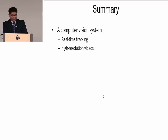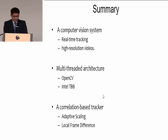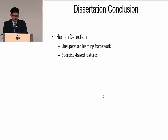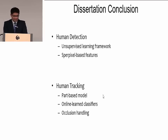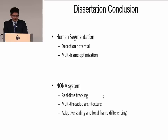To summarize this chapter: we developed a computer vision system for real-time tracking in high-resolution videos using a multi-threaded architecture with OpenCV and Intel TBB, and a correlation-based tracker using adaptive scaling and local frame differencing. To conclude this dissertation: first, we propose a human detection method using an unsupervised learning framework and superpixel-based features. Second, we propose a human tracking method using a part-based model, online learning classifiers, and two occlusion handling methods. Third, we propose a human segmentation method using detection potential and multi-frame optimization. Last, we introduce the NUNA system for real-time tracking using multi-threaded architecture, adaptive scaling, and local frame differencing.